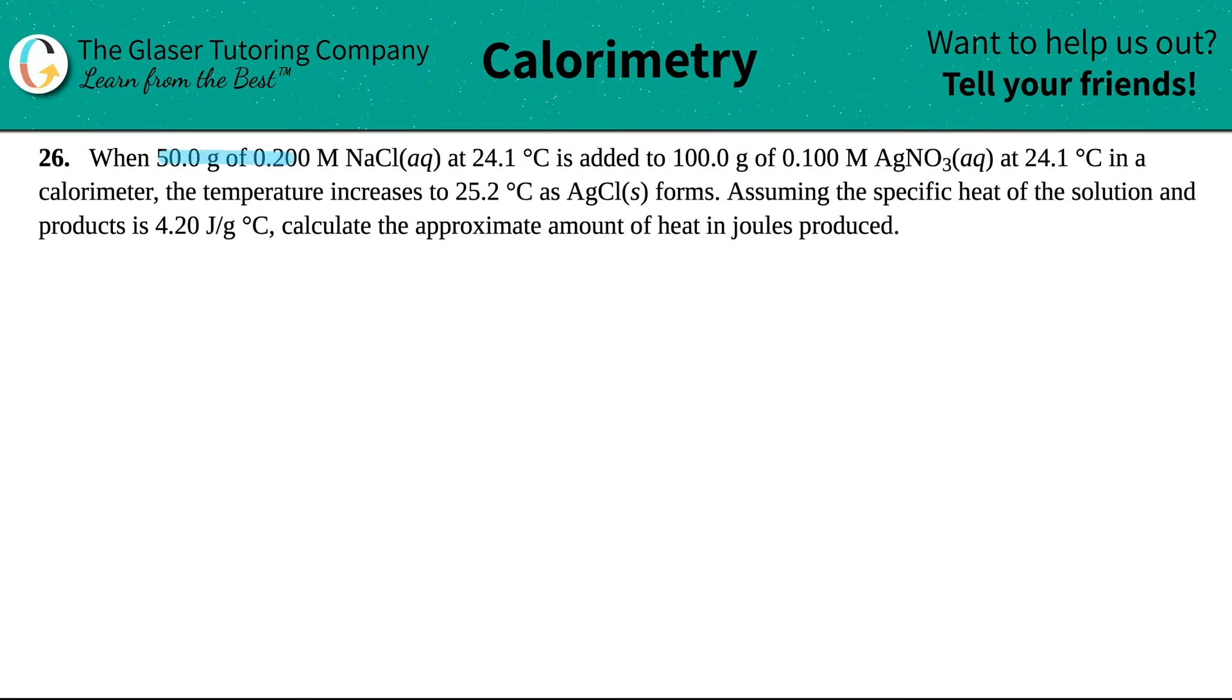When 50.0 grams of 0.200 molarity NaCl aqueous compound in aqueous form at 24.1 degrees Celsius is added to 100.0 grams of 0.100 molar silver nitrate, AgNO3, at 24.1 degrees Celsius in a calorimeter.